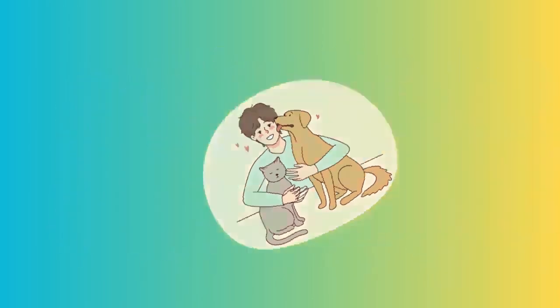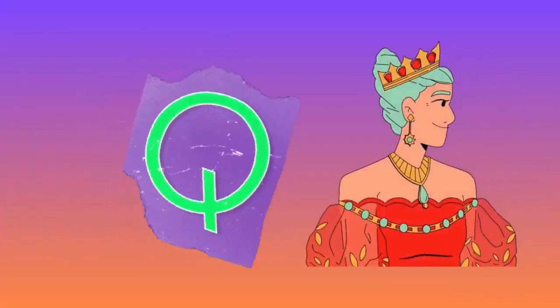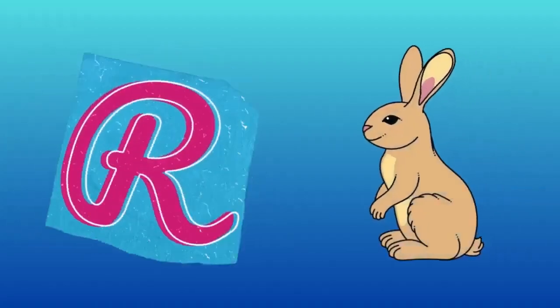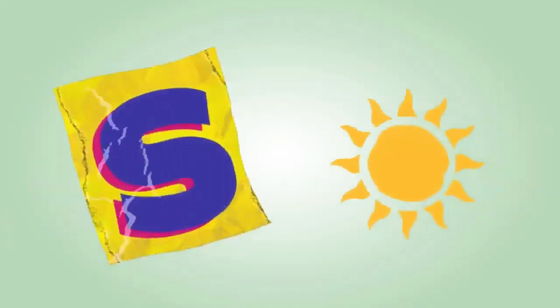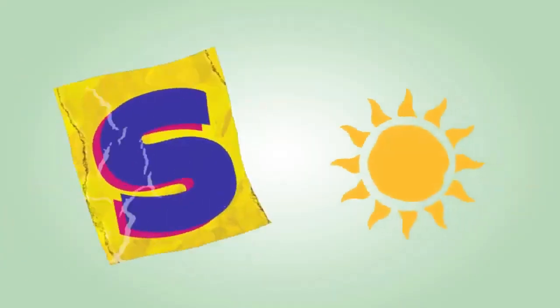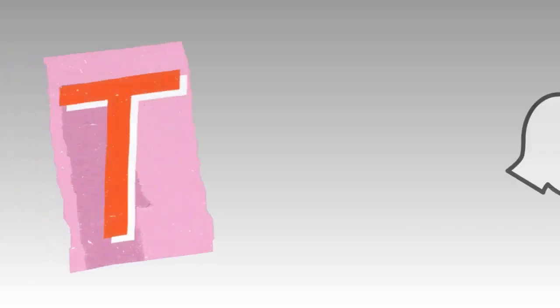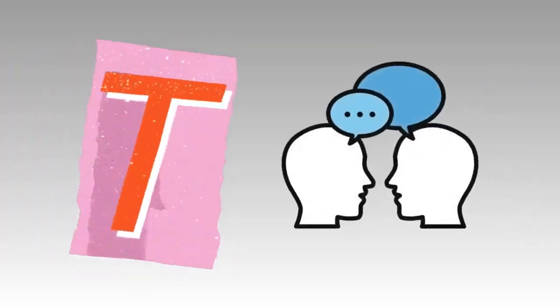Q is for queen, qu-qu-queen. R is for rabbit, r-r-rabbit. S is for sun, s-s-sun. T is for toad, t-t-toad.